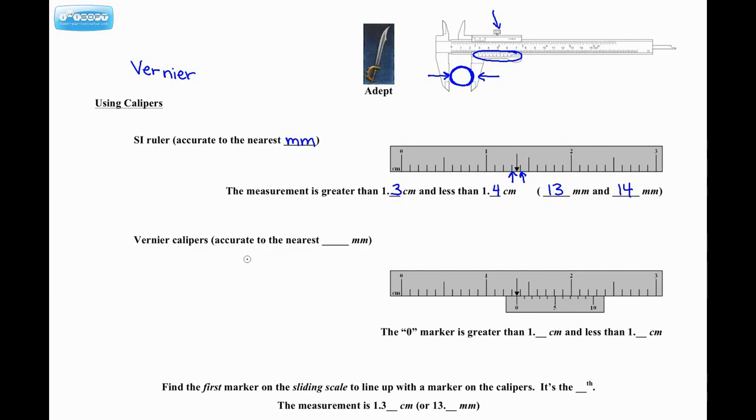So here's how you actually read them. Vernier calipers are accurate to the nearest, not millimeter, but a tenth of a millimeter. So 0.1 millimeters, or it's the same as saying one hundredth of a centimeter. That's as accurate as it will give you.